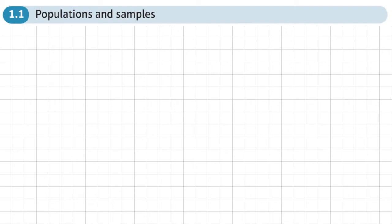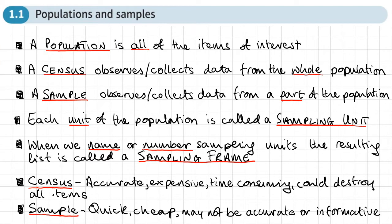This is the first section on chapter one on data collection and this section is on populations and samples. So the first thing is I'm going to list below some definitions. Let's go through these definitions here.